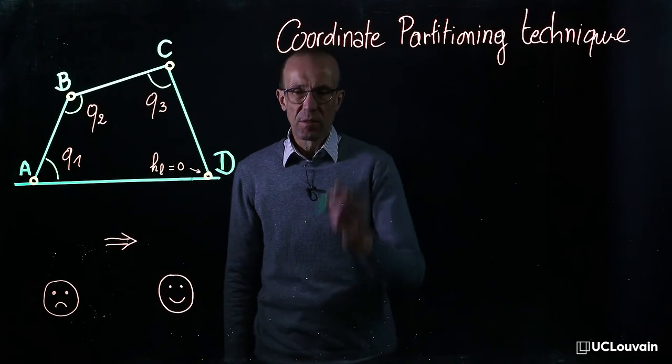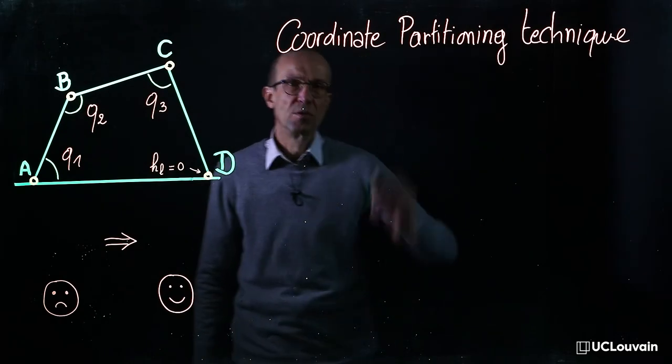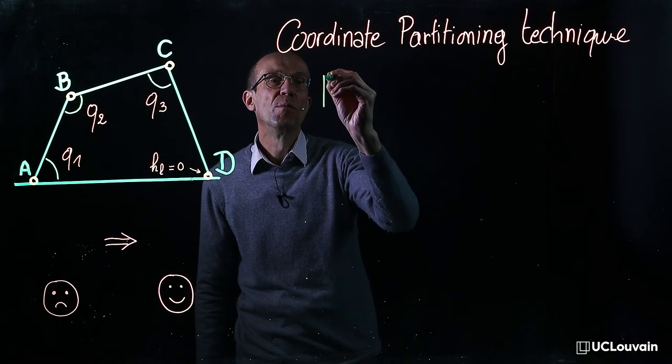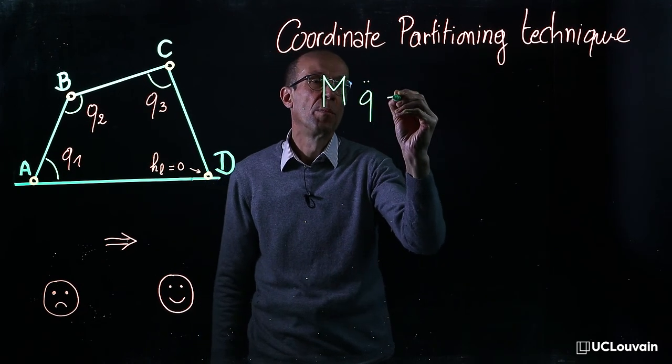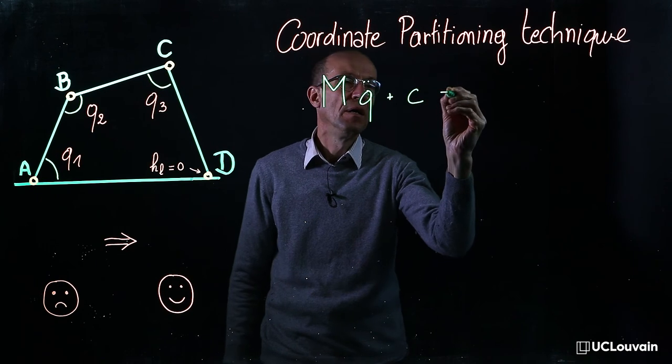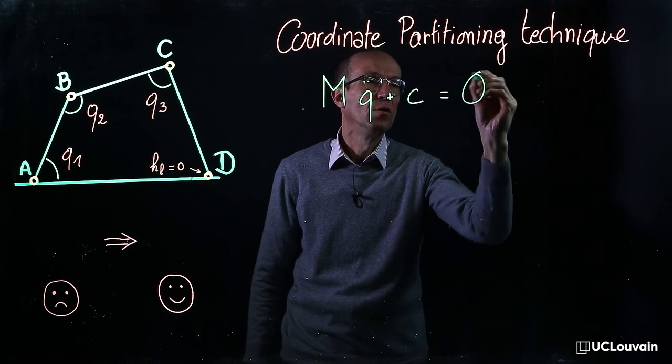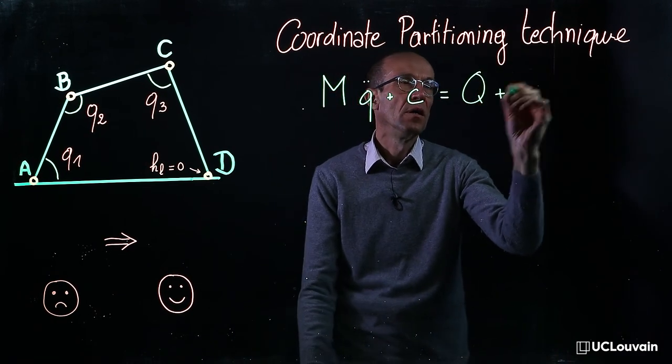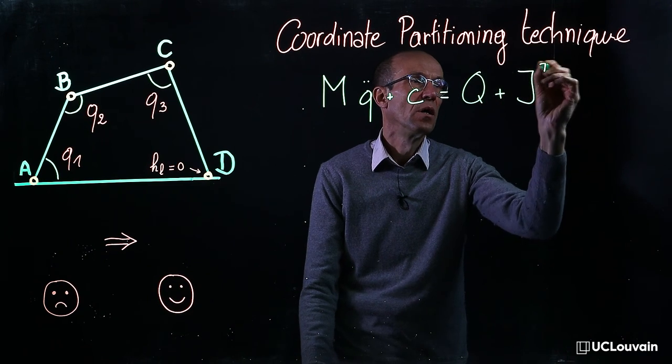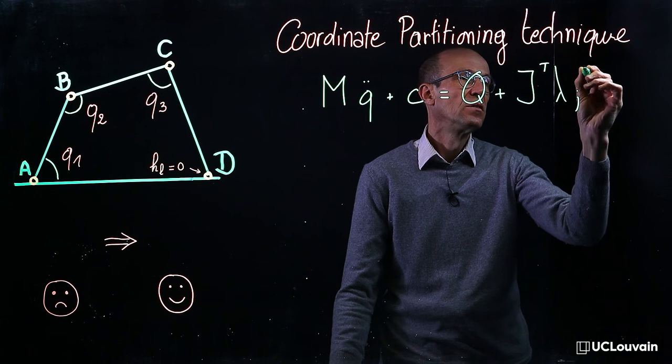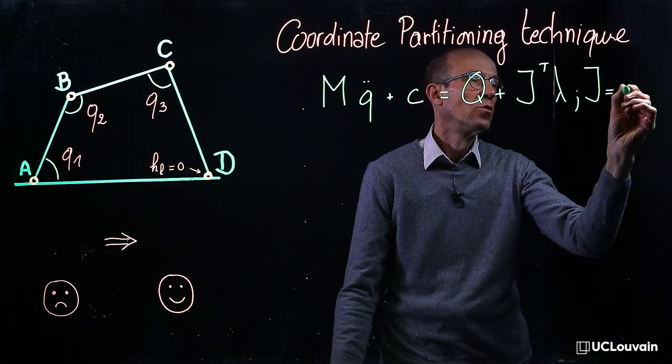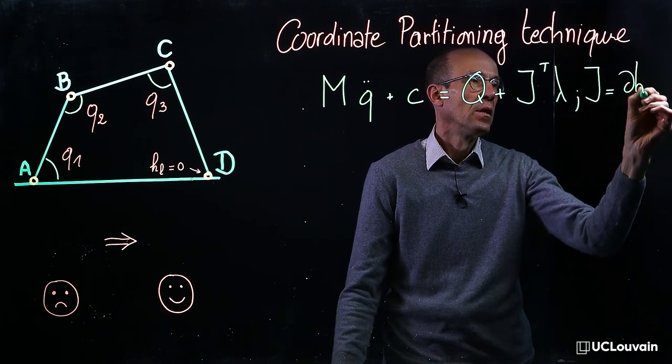Let's now summarize the multibody equations. The equations of motion read: M q̈ + c equals Q plus J transpose λ, where J stands for the constraints Jacobian.